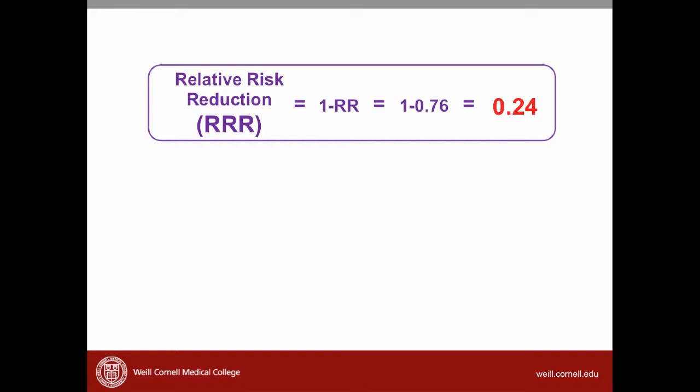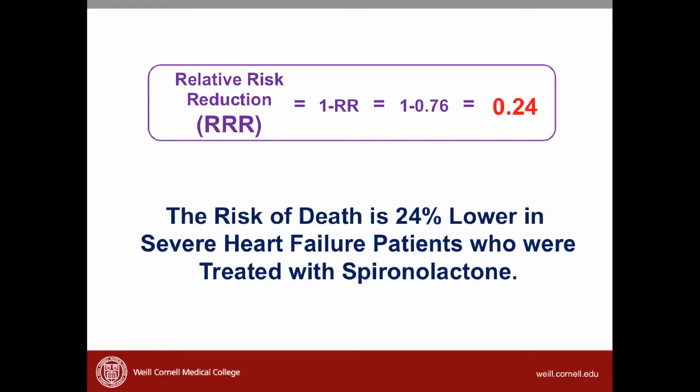The next value is the relative risk reduction, which is simply 1 minus the relative risk. In this case, the relative risk reduction is 1 minus 0.76, or 0.24 — also 24%. In plain language, we would say the risk of death is 24% lower in severe heart failure patients who were treated with spironolactone.